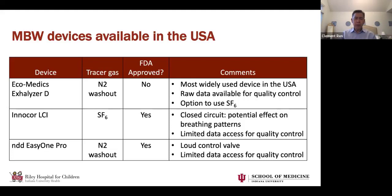The other device, more popular in Europe but available in the US, is the NDD Easy One Pro. It is also a nitrogen washout device and is FDA approved. In its current format there is limited data access for quality control, although they're trying to change that. It also has a very loud control valve on inspiration, which can sometimes frighten kids. The cost for these devices is somewhere between $30,000 and $60,000.